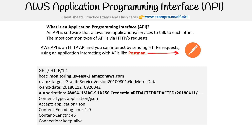Each service generally has a service endpoint. For example, where it says 'monitoring,' that's going to be CloudWatch. Sometimes the endpoints are named after the services, and sometimes the name is a bit obscure.